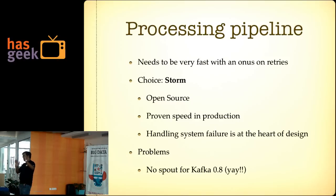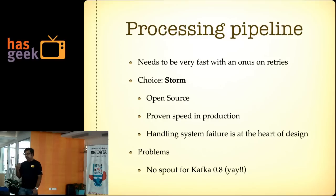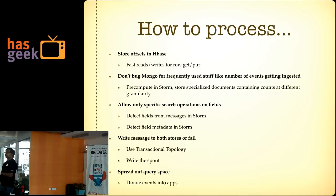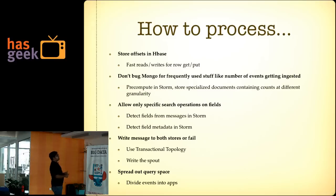To recap the major parts: the queue system is Kafka acting as the staging area, the processing is Storm, and there are two data stores — the query store (MongoDB) and the long-term store (HBase). What do we actually do in the Storm cluster? We decided to go with HBase as the offset store because we knew exactly what we would write and read — it was always going to be a get or a put, which is extremely fast on HBase. We also did not want to hit MongoDB for frequently-used queries like histograms.